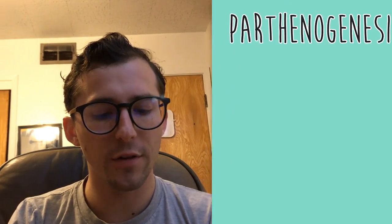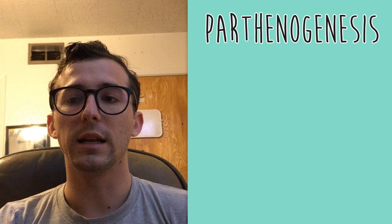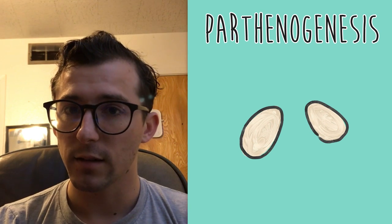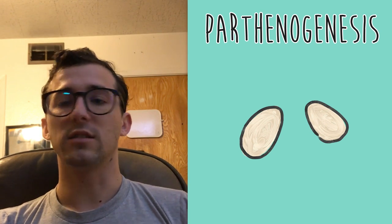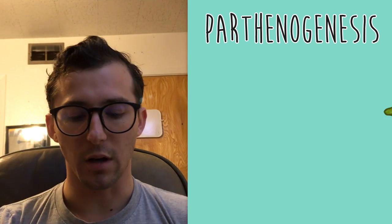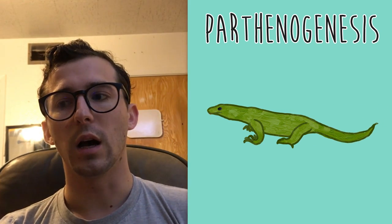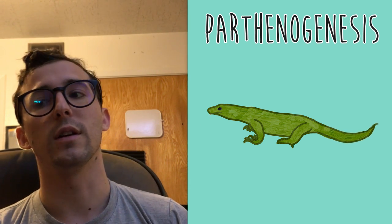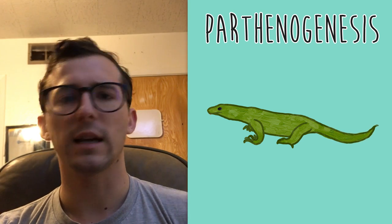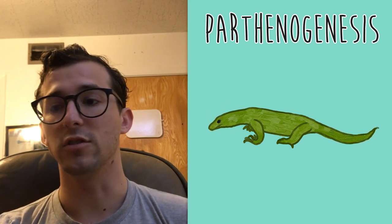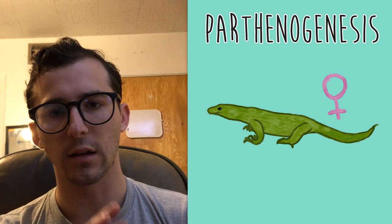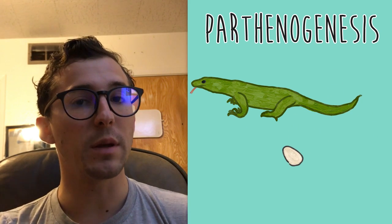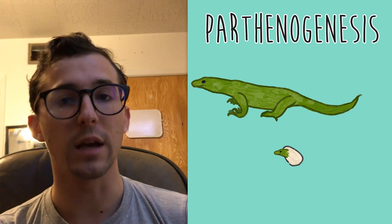It's called parthenogenesis, and it refers to certain creatures on earth that reproduce with eggs asexually. It's not normal — they don't usually reproduce this way — but komodo dragons do this, along with other types of reptiles like lizards and snakes, as well as some insects and fish. It's usually a last resort situation where there isn't another gender available. It's always a female that does it, and she'll lay an egg that will still be fertilized even though there was no male to fertilize it.